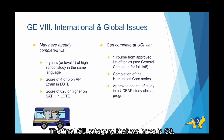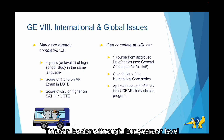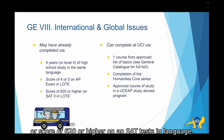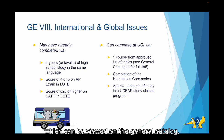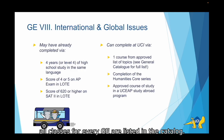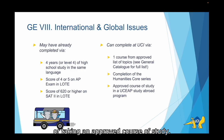The final GE category is GE 8, International and Global Studies. Like GE 6, this one can also be completed prior to coming to UCI — through four years of high school study in the same language, a score of four or five on an AP exam in a language other than English, or a score of 620 or higher on an SAT test in language. At UCI, this GE can be completed through one course from the list of approved topics, which can be viewed in the general catalog. GE 8 can also be fulfilled by completing the Humanities Core series or taking an approved course of study in a UCEAP study abroad program.